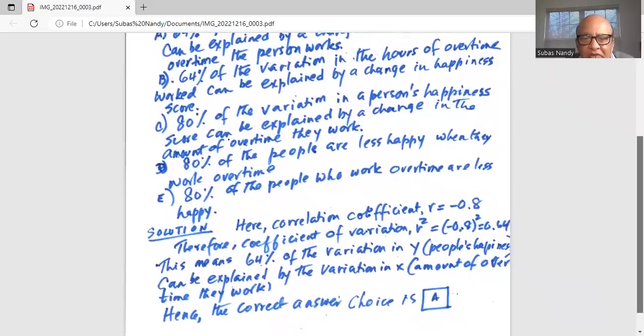This means that 64% of the variation in Y, people's happiness, can be explained by variation in X, amount of overtime they work.